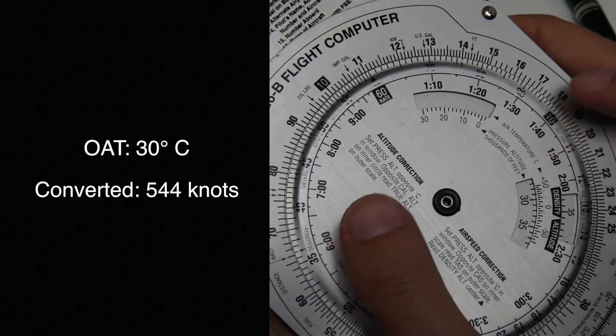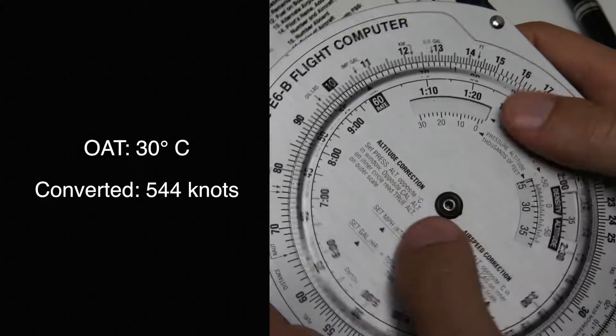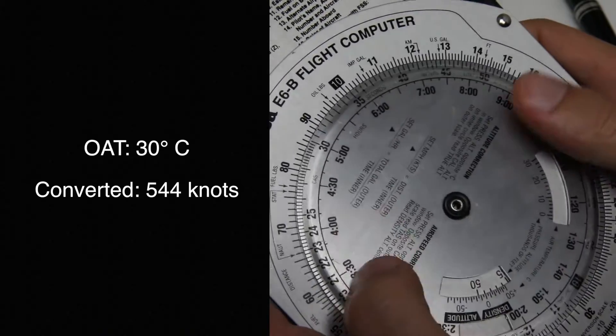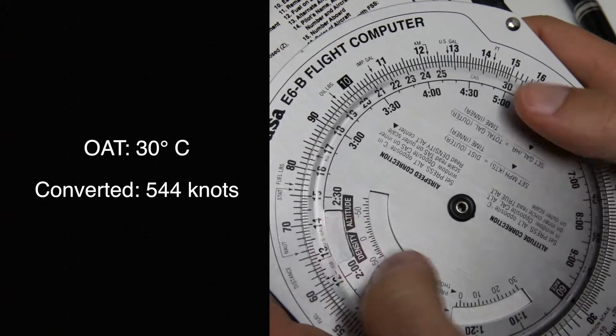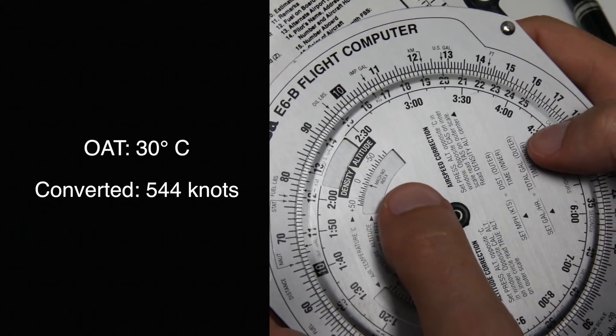To calculate Mach to knots, we have to first find the Mach index on the window right here. So we'll turn it around, oh there it is, Mach index number.